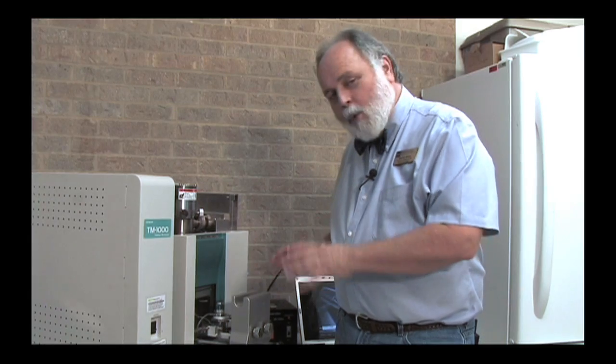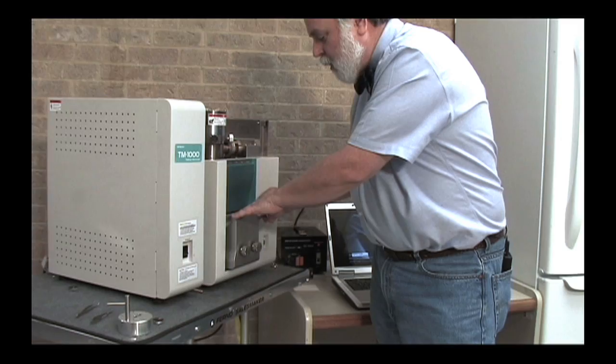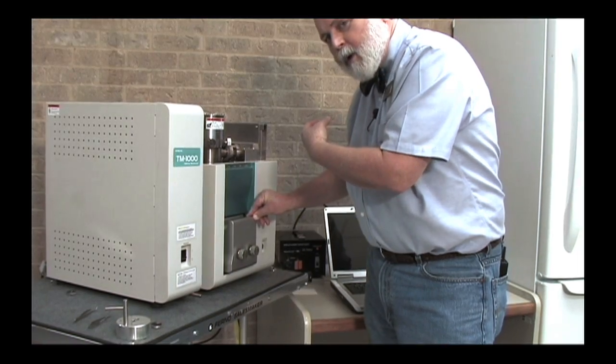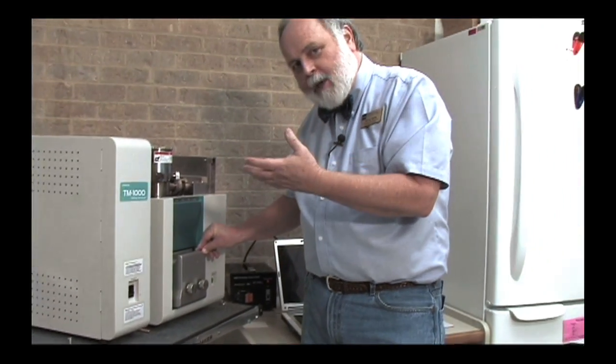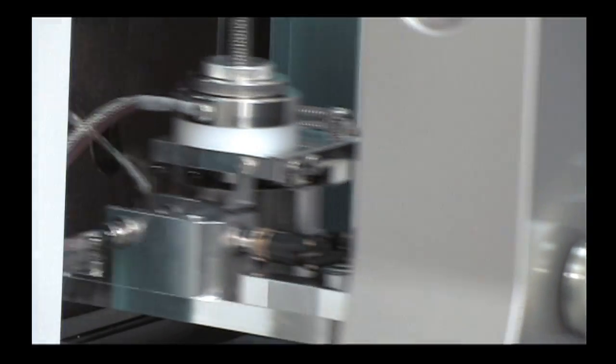Electron microscopes work in a vacuum. What we're going to have to do is close this drawer, put our specimen in the chamber, and pull all the air out of that chamber. But we still want to be able to see different parts of the specimen, and that's where these two knobs come into play. Let's open the drawer and see what the knobs actually do.